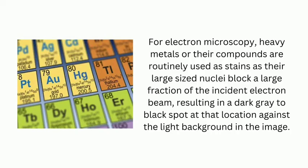For electron microscopy, heavy metals or their compounds are routinely used as stains, since their large-sized nuclei block a large fraction of the incident electron beam, resulting in a dark gray to black spot against a light background in the image wherever the antigen is present within the sample.